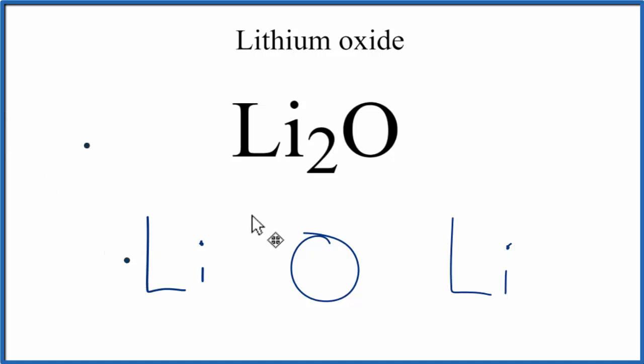So let's put one right here, and then one over here. Oxygen is in group 16, sometimes called 6A, it has six valence electrons.